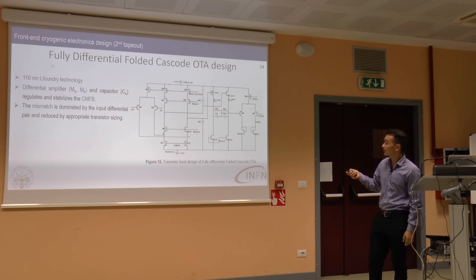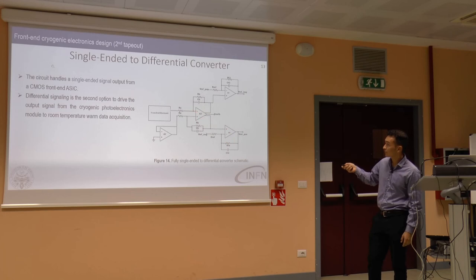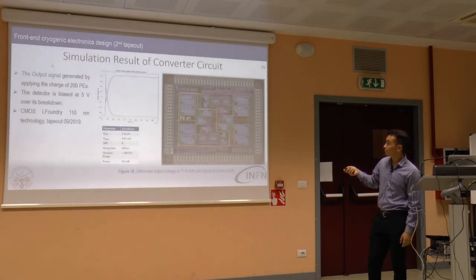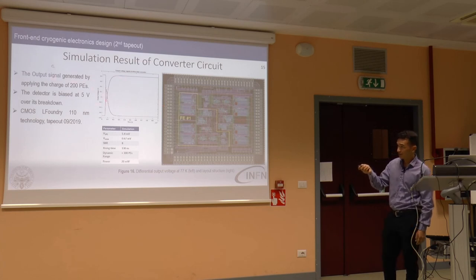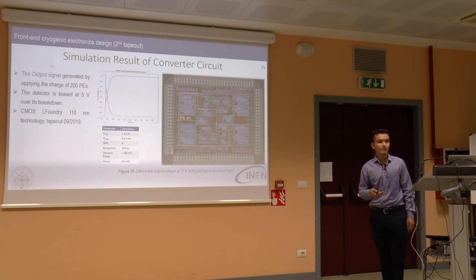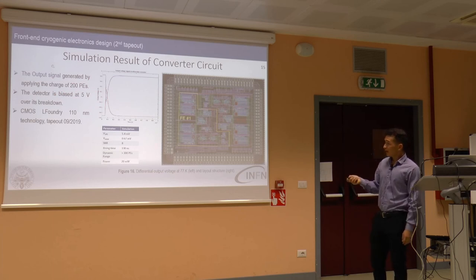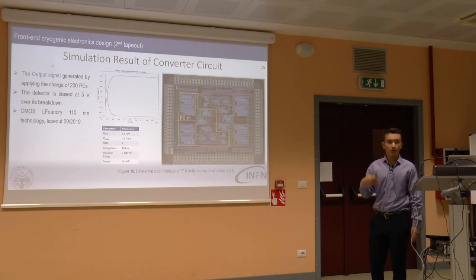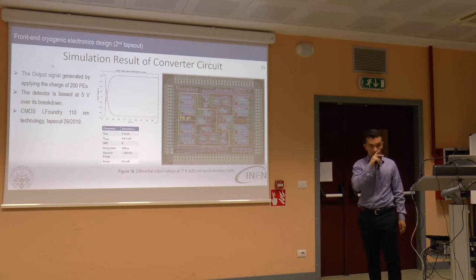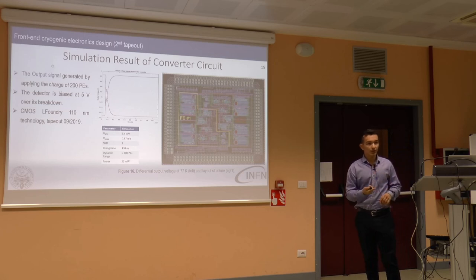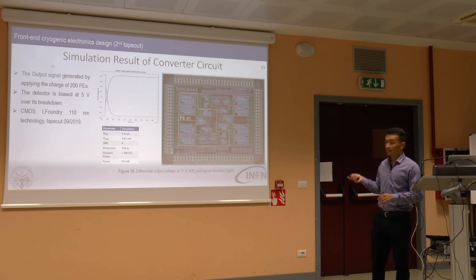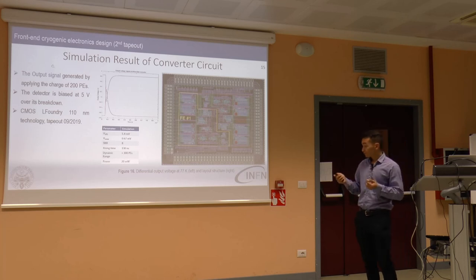For this second tape-out, we use a fully differential cascode structure, represented by this block. This is the layout of the second tape-out. Post-layout simulation with 200 photoelectrons applied at the inputs shows a signal-to-noise ratio of eight and a dynamic range much higher than in the previous tape-out. This tape-out is implemented in L-Foundry 100-nanometer technology, while the first used UMC 130-nanometer.